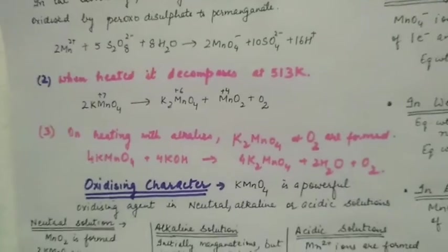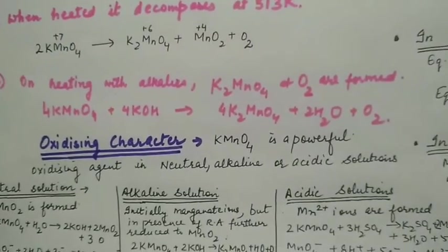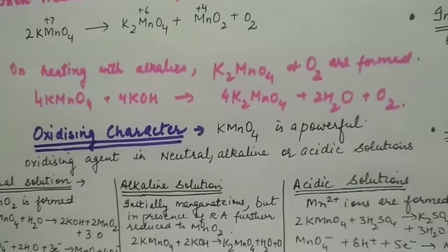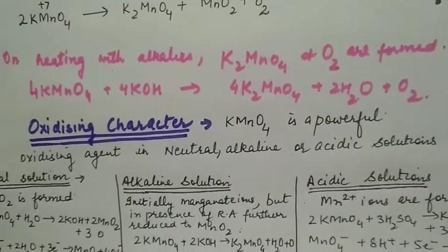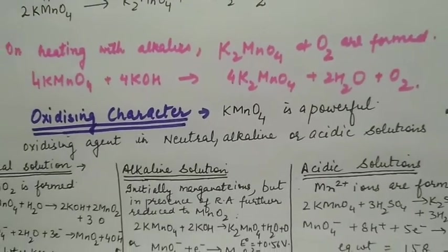Heating with alkalis forms potassium manganate and oxygen. Potassium permanganate plus potassium hydroxide gives potassium manganate plus water plus oxygen.